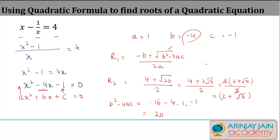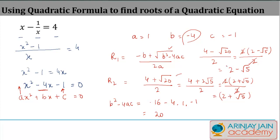For the second root, we have 4 minus root 20 divided by 2. Resolving this the same way gives 2 times 2 minus root 5 divided by 2, and after cancellation we get 2 minus root 5 as the second root. So the two roots of this equation found using the quadratic formula are 2 plus root 5 and 2 minus root 5.